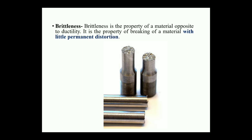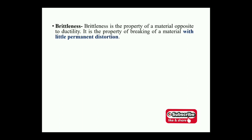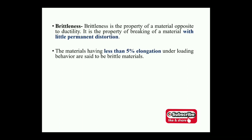Brittleness is the property of a material opposite to ductile. It is the property of breaking of the material with little or no permanent deformation — suddenly breaking into two or more parts. Technically, materials having less than 5% elongation under loading behavior are said to be brittle materials.